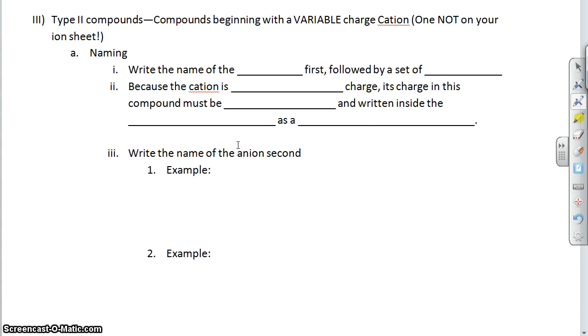In this lesson we will deal with type 2 compounds and their naming and their formulas. These are compounds that begin with a variable charge cation, a cation that is not on your ion sheet. Naming is actually very similar to the first type naming with a couple of key differences, really just one key difference.